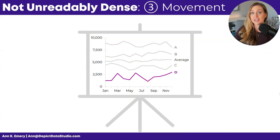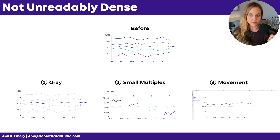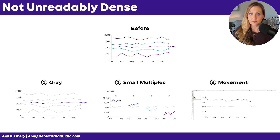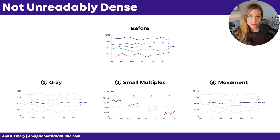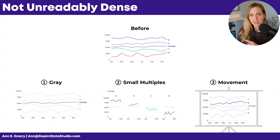Here's a recap of the before and the three fixes. Fix number one: the gray fix. Number two: small multiples. Number three: movement — either by interactivity, by a looping GIF, or by a dynamic presentation where you're clicking through one slide at a time, matching your speaking points to the visuals that people are looking at.